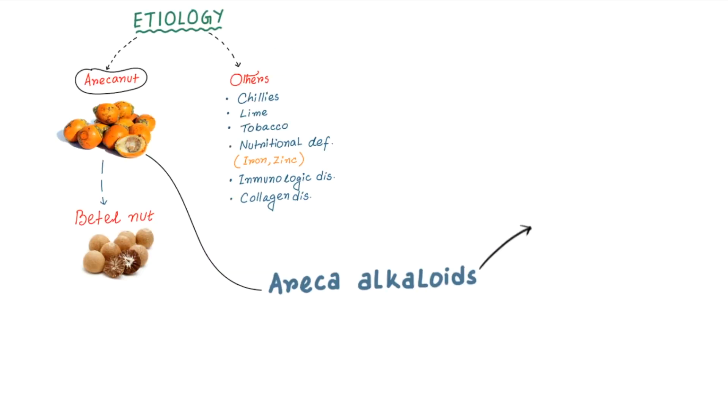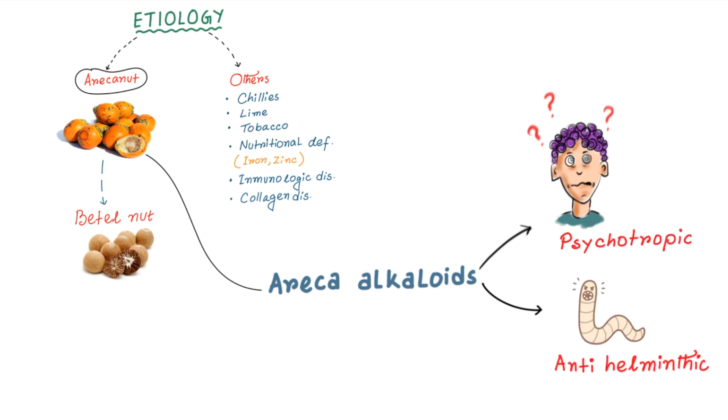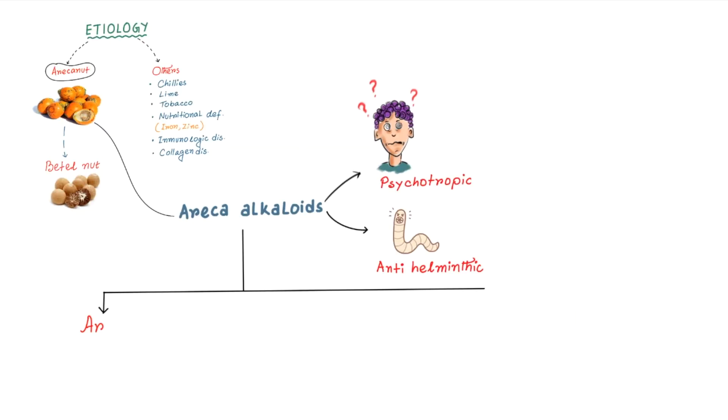Arecanut produces alkaloids which have psychotropic and anti-helminthic properties. Mainly four types of alkaloids have been identified: arecoline, arecadine, guvacine and guvacoline.